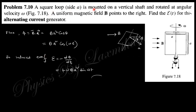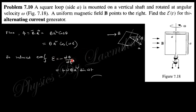Next: a square loop of side A is mounted and rotates with angular velocity ω in a uniform magnetic field pointing to the right. Find the EMF — this is the alternating current generator. At a certain time the loop makes angle θ with respect to B. The flux Φ = B·A²·cos(θ) = B·A²·cos(ωt). The induced EMF ε = −dΦ/dt = ωBA²·sin(ωt). This sinusoidal or alternating current is generated within the loop.